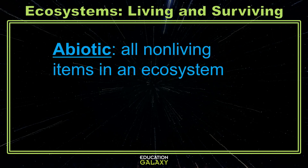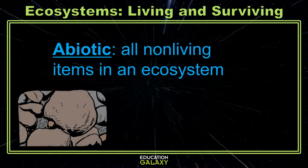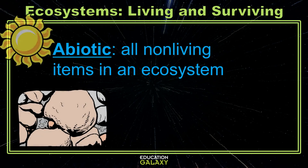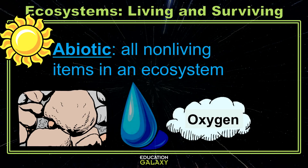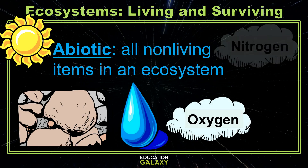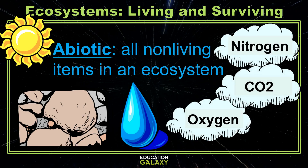Abiotic means all of the other stuff that isn't, wasn't, and won't be alive — things like rocks, dirt, light, warmth, and chemicals like oxygen, water, nitrogen, or carbon dioxide. Since these things haven't ever been alive, we don't call them dead. They can't die. We simply say they are non-living.